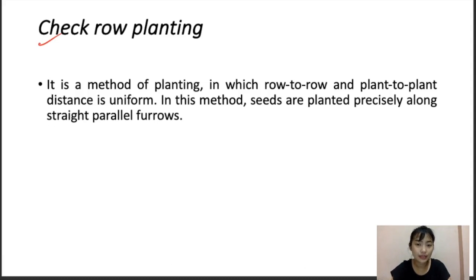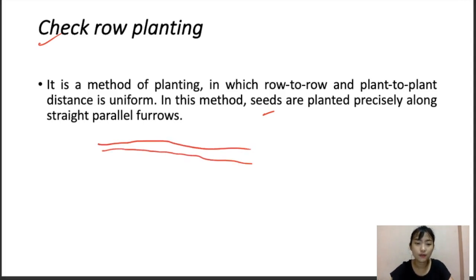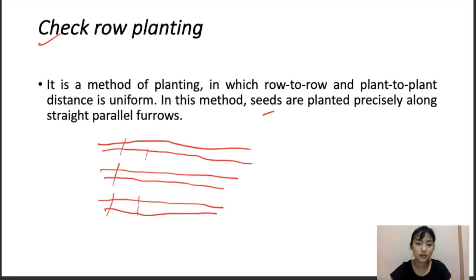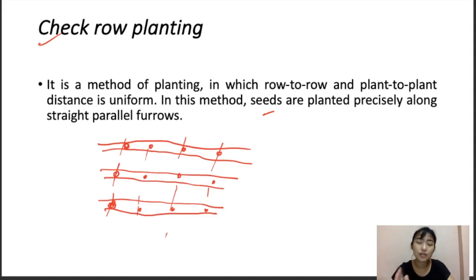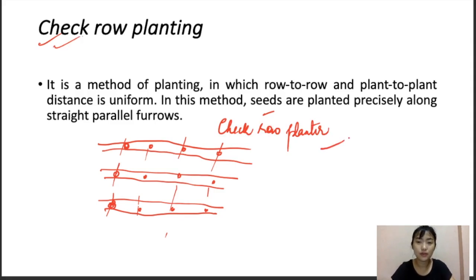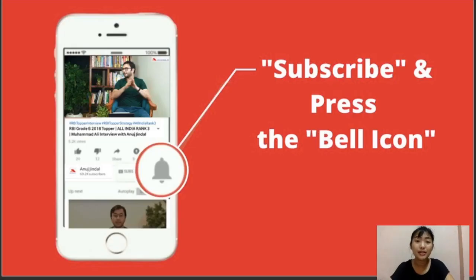In check row planting, both row-to-row and plant-to-plant distances are uniform. Seeds are planted precisely along parallel rows at a certain distance from each other, maintaining uniformity. The rows are always in perpendicular directions. The machine used for check row planting is called a check row planter. That's all for today — please subscribe, press the bell icon for notifications, and hit the thumbs up if you liked the video.